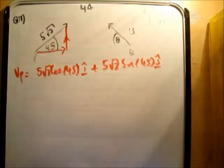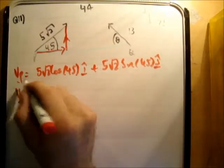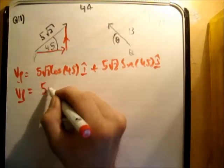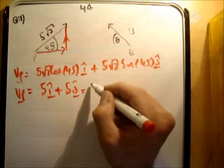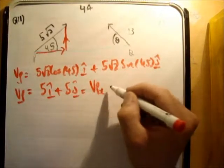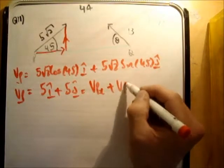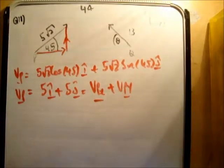The cos and sin 45 are root 2 over 2. So you get VP is equal to 5 I hat plus 5 J hat equals V P sub x plus V P sub y. 5 I hat plus 5 J hat. So that's pretty straightforward.